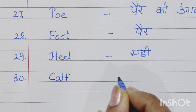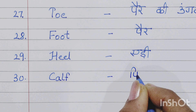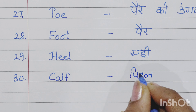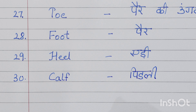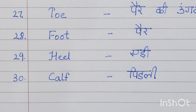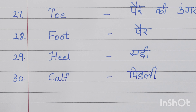Then comes our twenty-third number, stomach. S-T-O-M-A-C-H, stomach means pet. Twenty-fourth is thigh, T-H-I-G-H, thigh means jang.